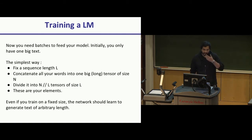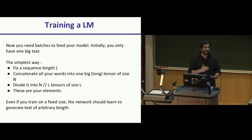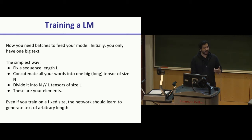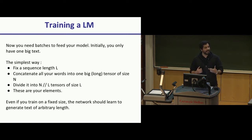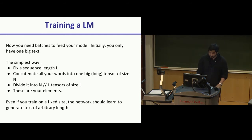For training a language model: say you have one extremely large text like the Wikipedia corpus. We pick a fixed sequence length L, split our huge corpus into fixed-length inputs of size L, and feed that to our RNN. The inputs are length L, and the target labels are the same input sentence shifted to the right by one — because we want to predict the next word that occurs at every given time step. We train this using cross-entropy.